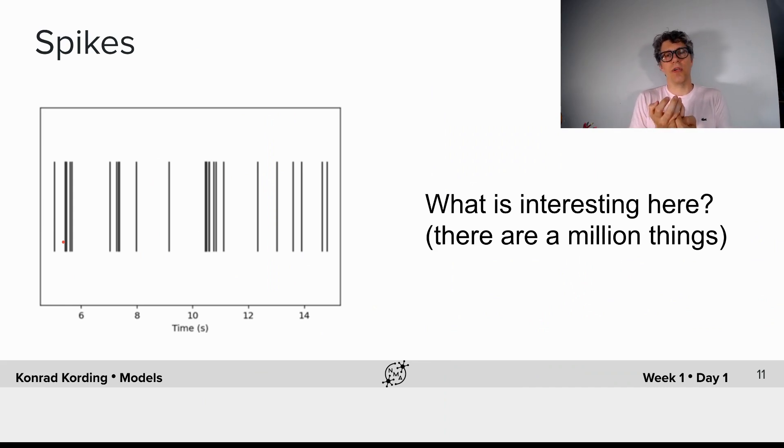Given that we have these spike trains, what are good questions we might want to ask? There's a million things we might ask. How do the spikes relate to the outside world? How do they relate to what the animal wants to do? How do they relate to behavior? There's so many different ways we could analyze the spikes.